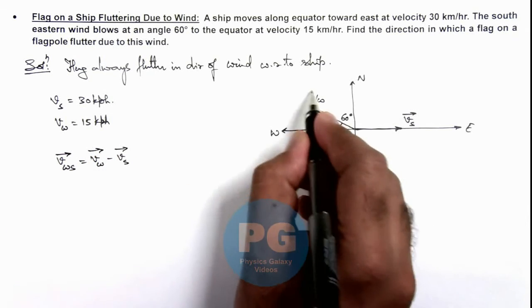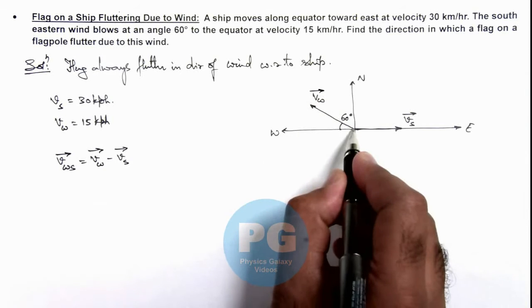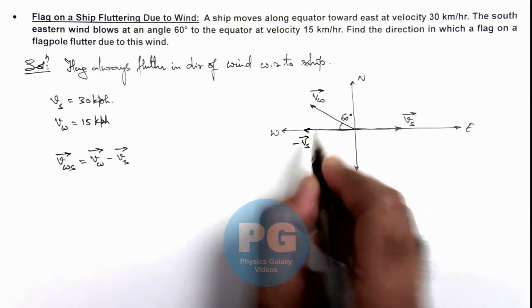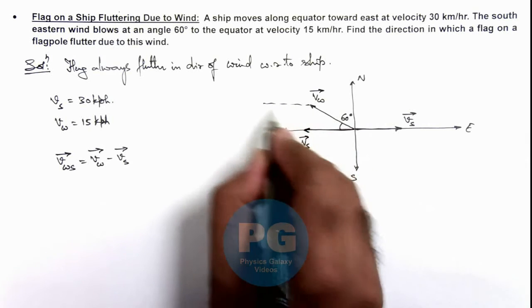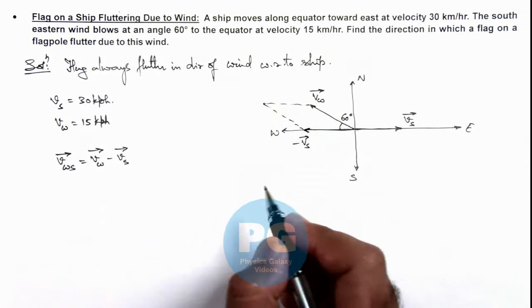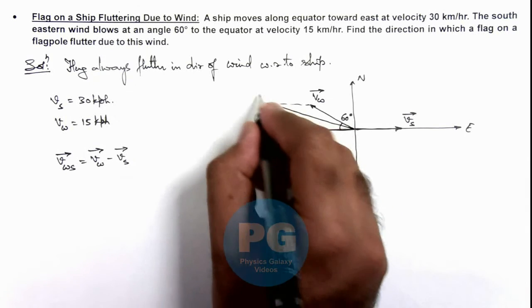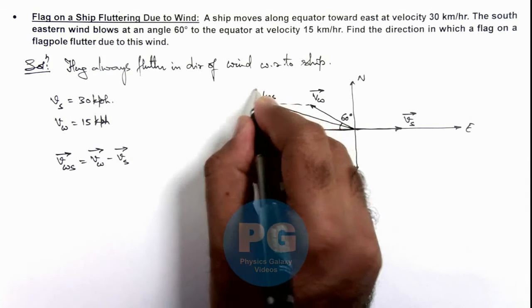Vw is in this direction. For minus Vs, we can reverse this vector. Going for the vector summation by parallelogram law, this is the direction of velocity of wind with respect to ship.